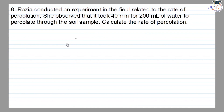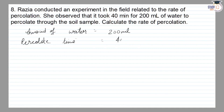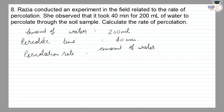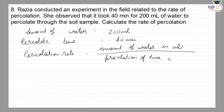To find the percolation rate: the amount of water is 200 ml, and the percolation time is 40 minutes. The percolation rate equals amount of water in ml divided by percolation time in minutes. So the answer is 200 divided by 40, which equals 5 ml per minute.